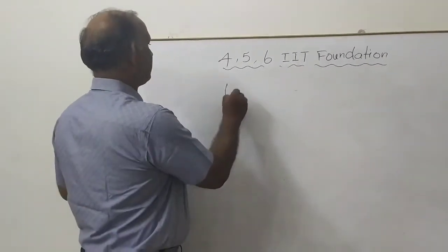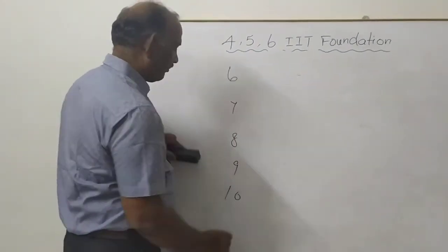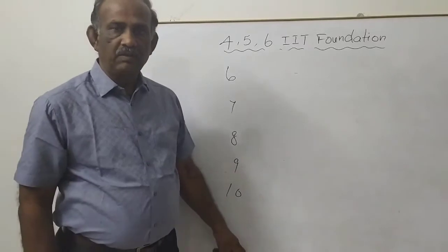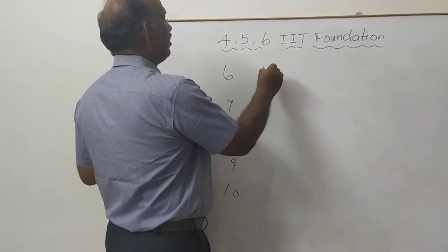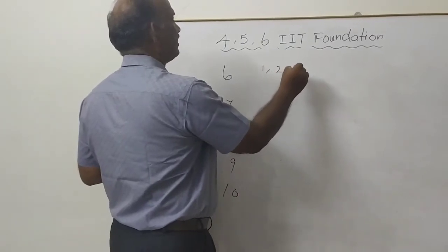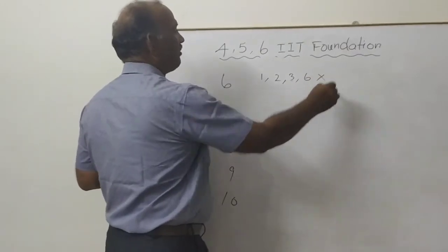Suppose you take 6 now. 6, 7, 8, 9, 10, 11, 12. Mentally you can do. What are the divisors of 6? 1 is a divisor, 2 is a divisor, 3 is a divisor, 6 is a divisor, it is not a prime number.